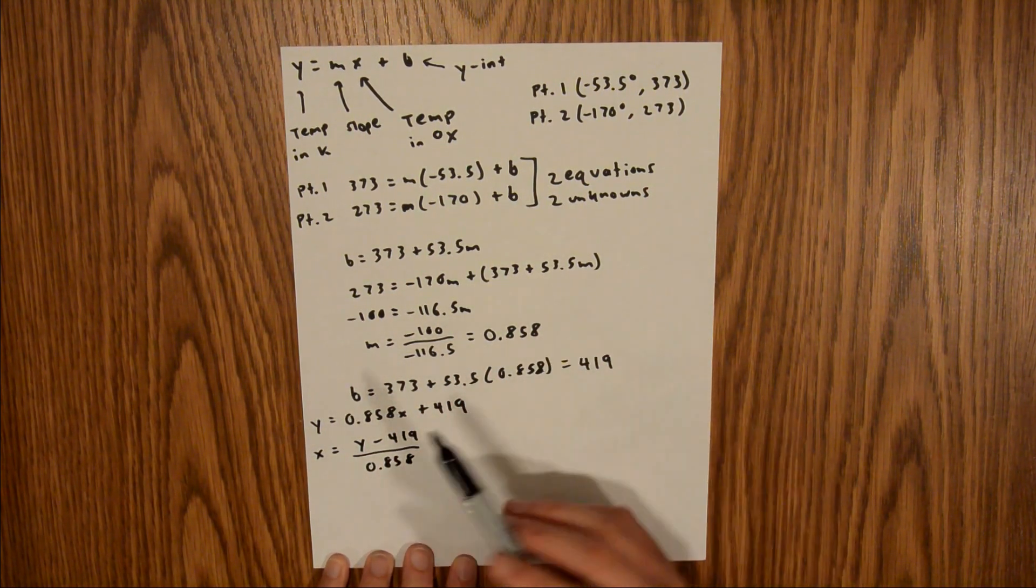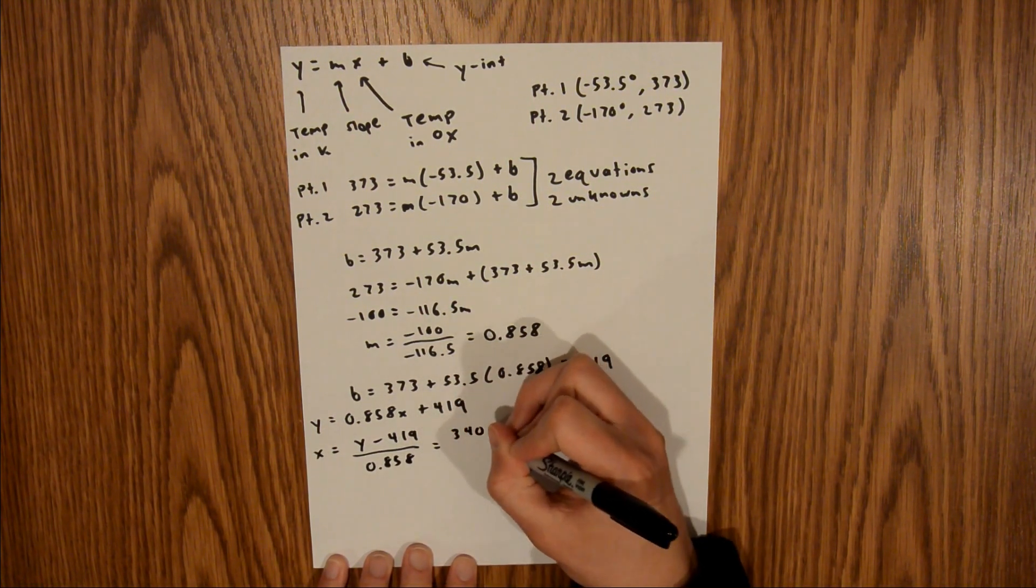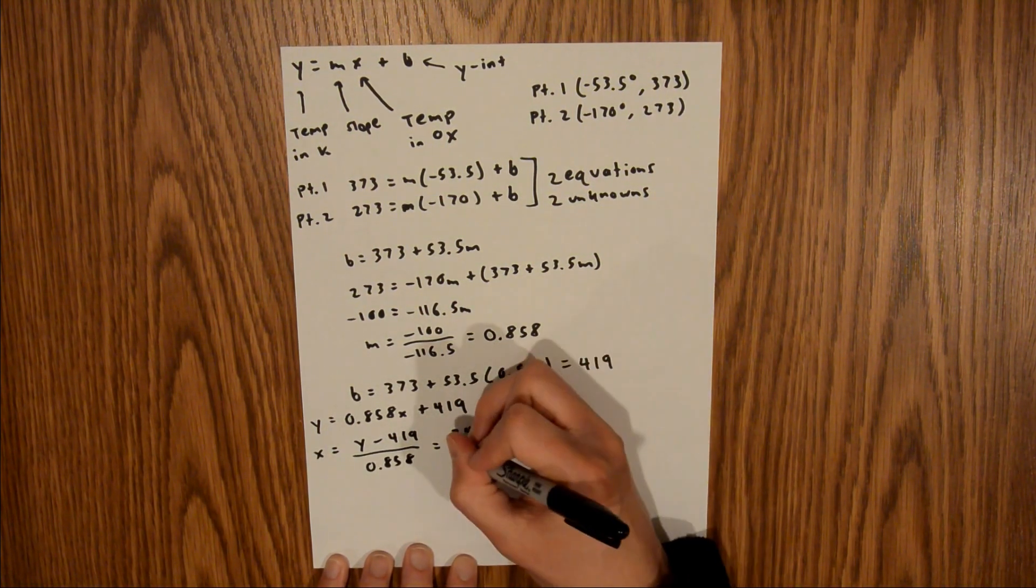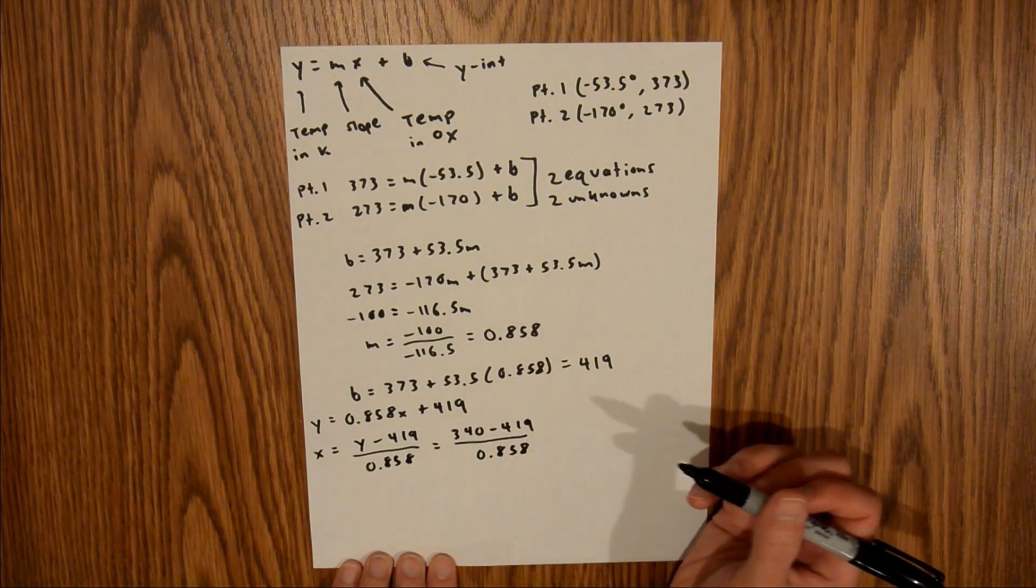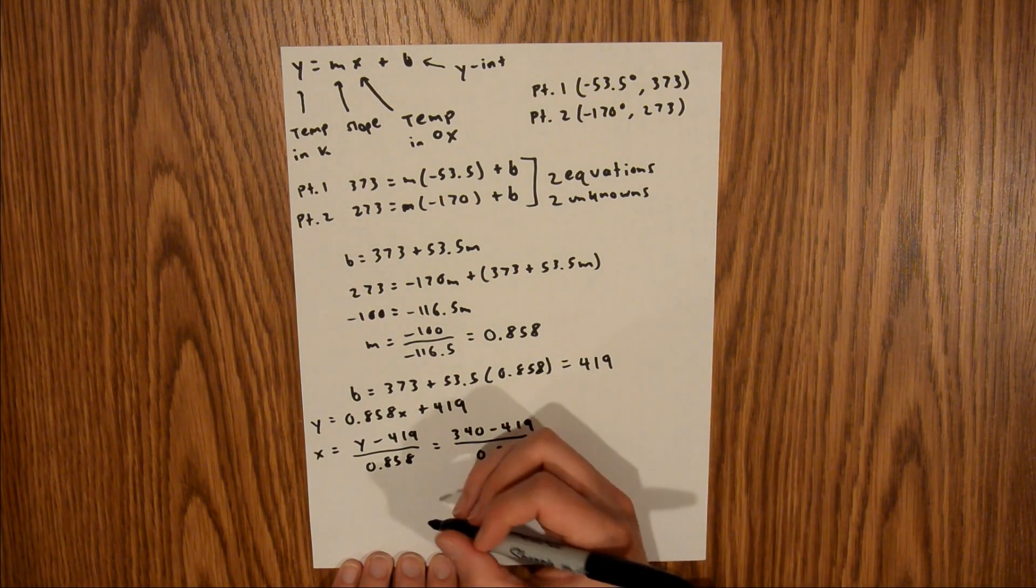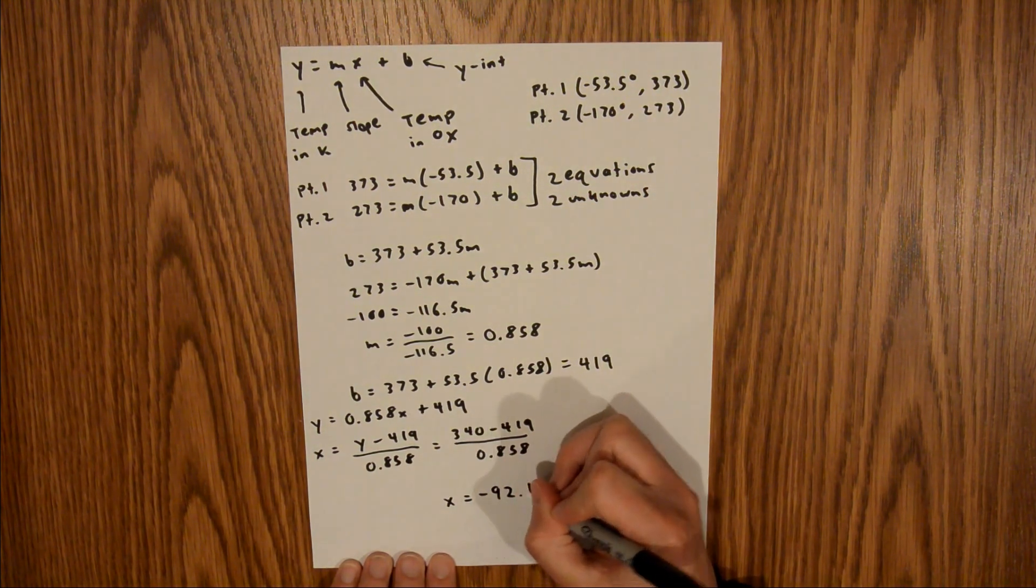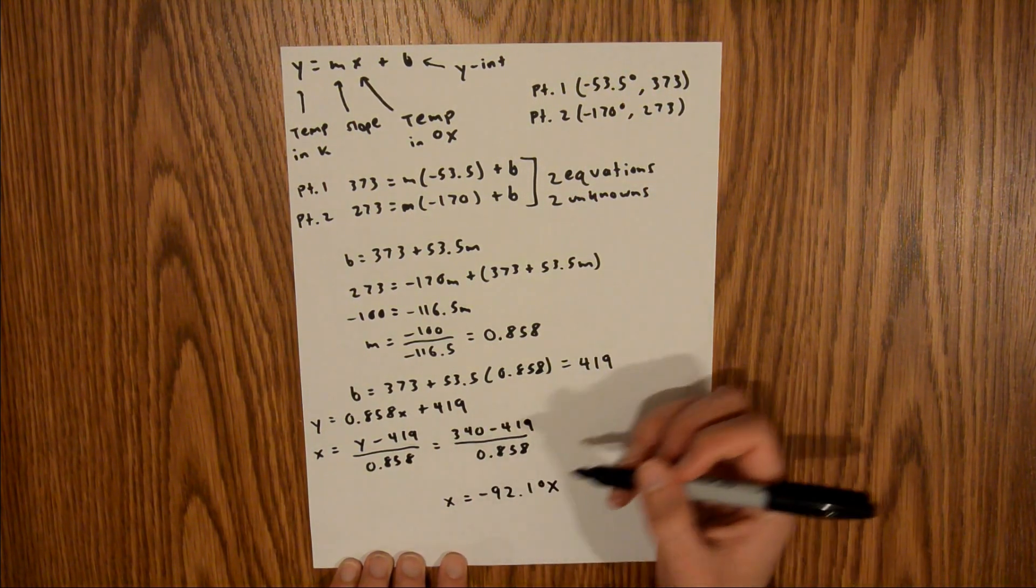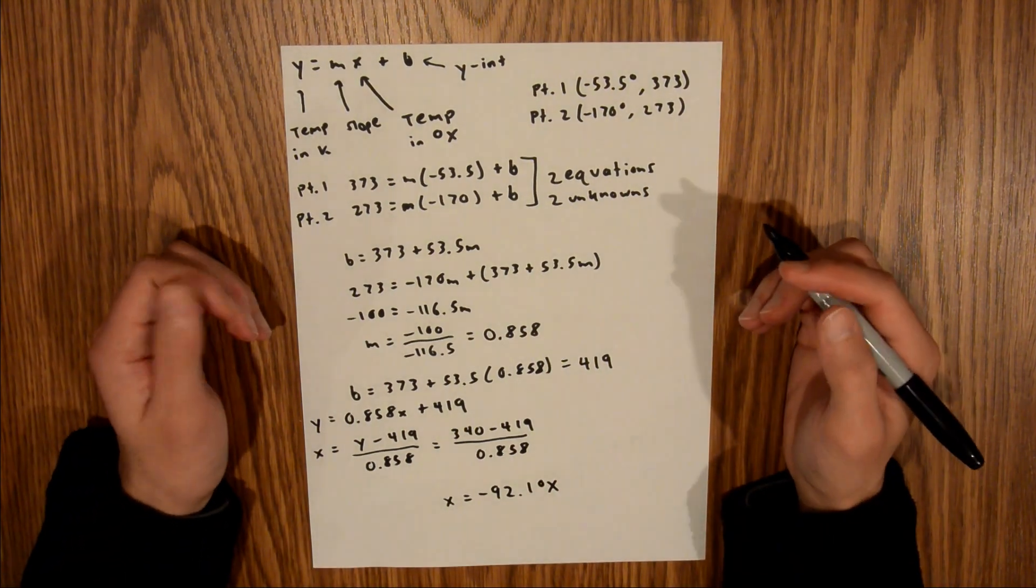And now, if we plug in our value of 340k, and now if you plug that into your calculator, you should find that our value for 340k in degrees x is negative 92.1 degrees x. And that is the final answer to this problem.